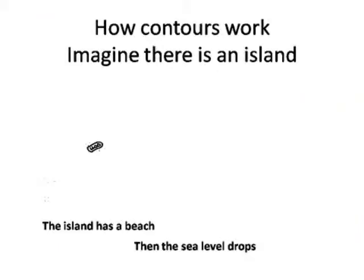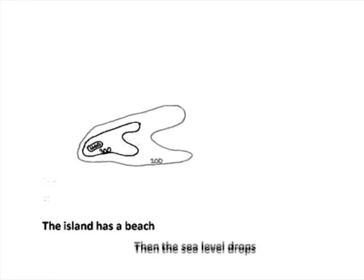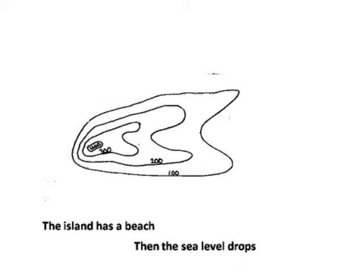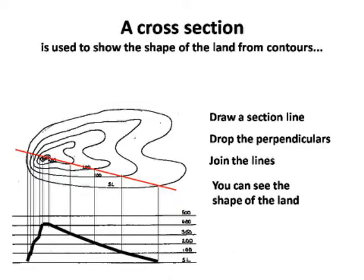If we have an island and the sea level were to drop by 100 meters, we'd get a new beach. If this happened again we'd get a second beach, and so on and so forth, until we got the pattern that we can see in front of us. These beaches would represent contours to show the shape of the land.